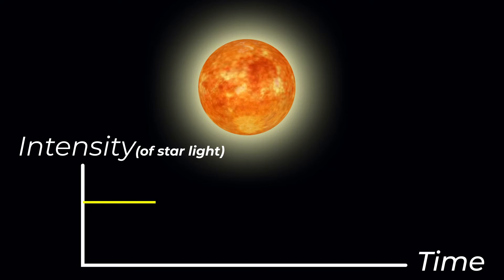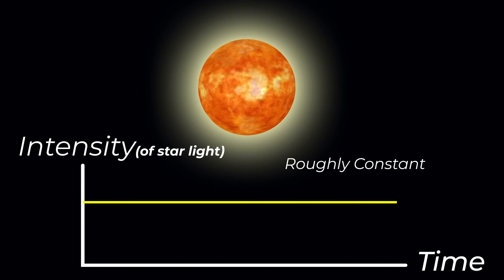Most stars emit light at a roughly constant rate. So, if you measure the intensity of light produced by a star over time, you'd get a straight line.